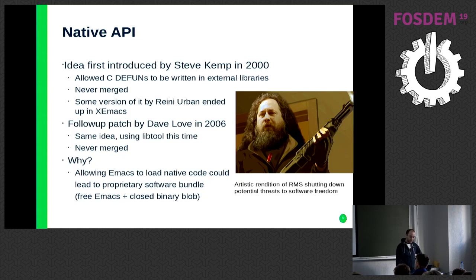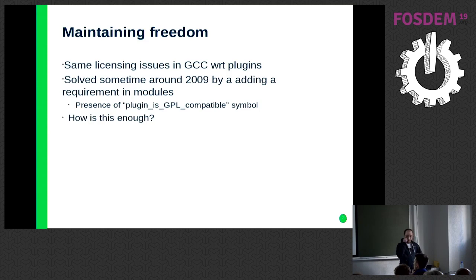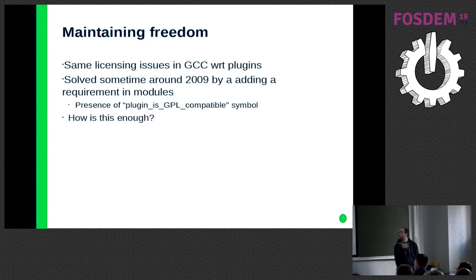Why was this never merged? Mostly because the people maintaining Emacs — which was mostly Richard Stallman at the time — were afraid that people would ship free Emacs along with already-built shared libraries that could potentially not be free. He was afraid people would make bundles of Emacs with non-free software. This problem existed for a while in other projects — GCC also had issues with dynamic plugins because of this GPL problem.